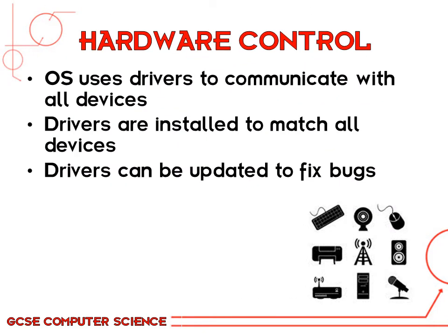Starting with hardware control — the operating system uses something called drivers to communicate with internal hardware and peripherals. Peripherals are other devices that you plug into your computer. Every piece of hardware has its own driver, which lets the operating system understand how it works properly. Drivers are installed to match the device by the operating system and can be updated, often fixing bugs or adding new features.